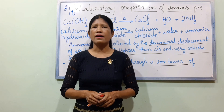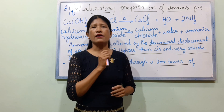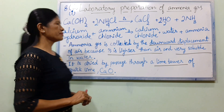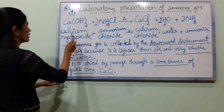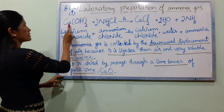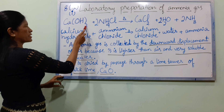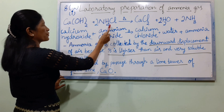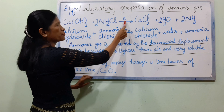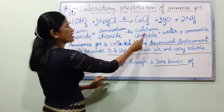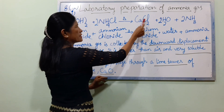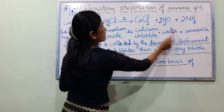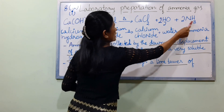The equation is: calcium hydroxide Ca(OH)₂ plus ammonium chloride NH₄Cl gives calcium chloride CaCl₂ plus water H₂O plus ammonia NH₃.